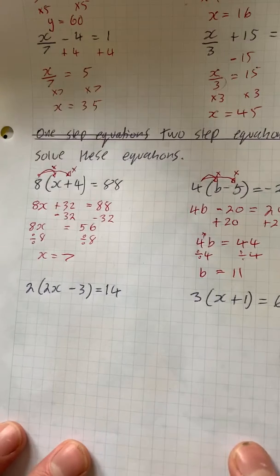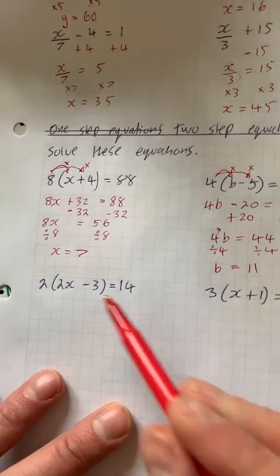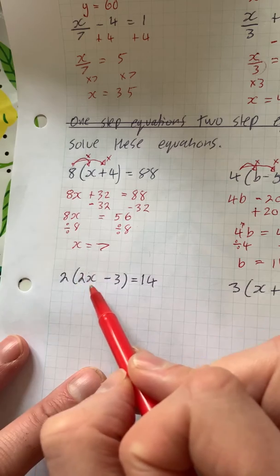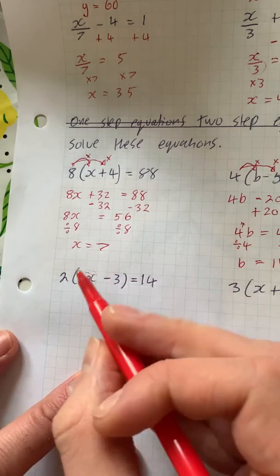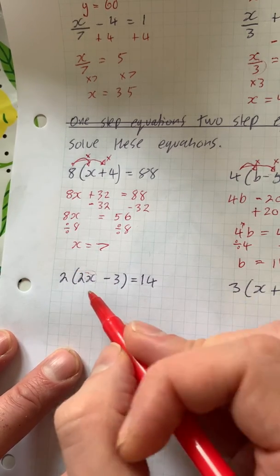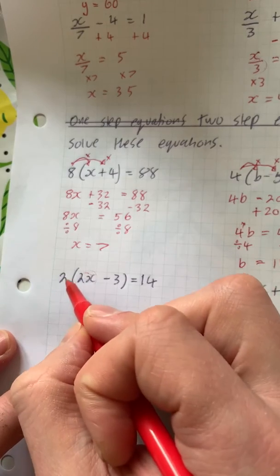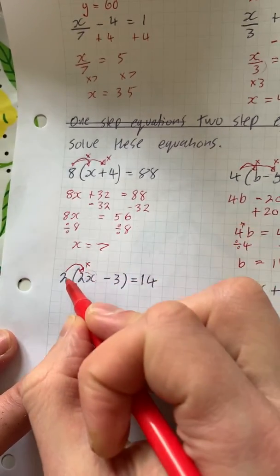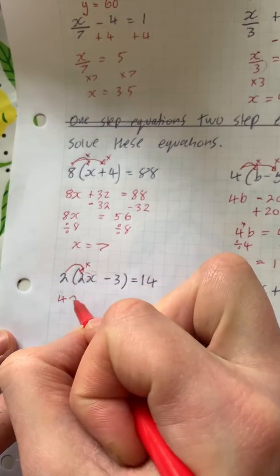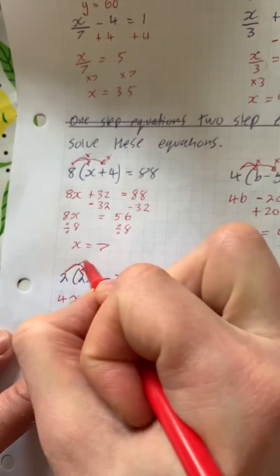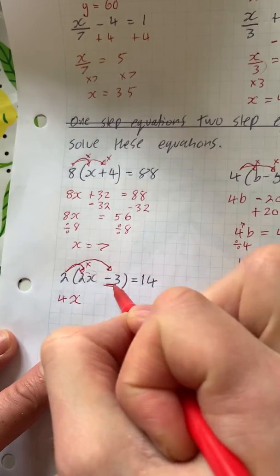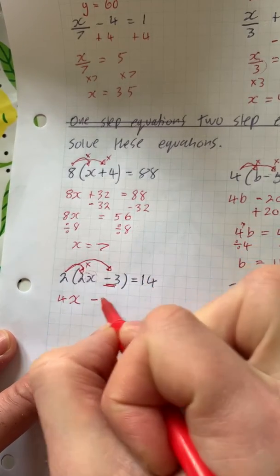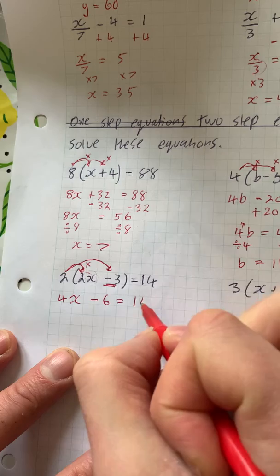Now this expanding one here is slightly more tricky because we've got a number in front of the x. We do exactly the same as before, but we just have to make sure we don't just write 2x. We need to make sure we do 2 times 2x. Now 2 times 2 is 4, but we've also got to times it by x, so we've got 4x. 2 times minus 3, which gives us minus 6, and that is equal to 14.